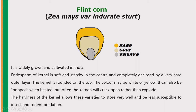Next is flint corn — Zea mays var. indurata. It also consists of a hard outer layer and soft embryo. It is widely grown and cultivated in India. The endosperm of the kernel is soft and starchy in the center and is completely enclosed by a very hard outer layer. The kernel is rounded on the top and the color may be white or yellow. It can also be popped when heated, but the kernels will crack open rather than explode, so flint corn is not suitable for popcorn. The hardness of the kernel allows it to store very well and makes flint corn less susceptible to insect and pest predation.